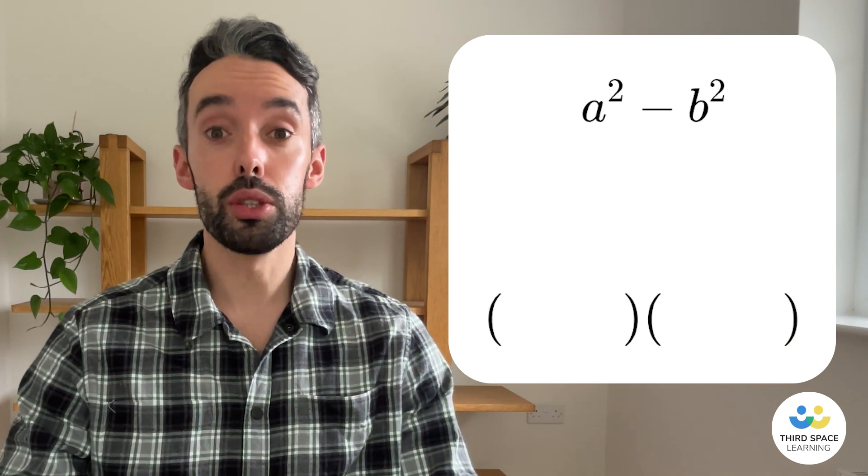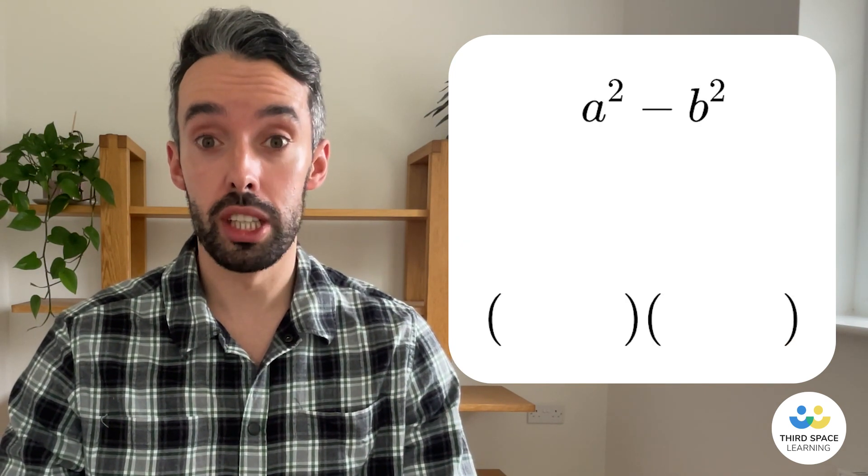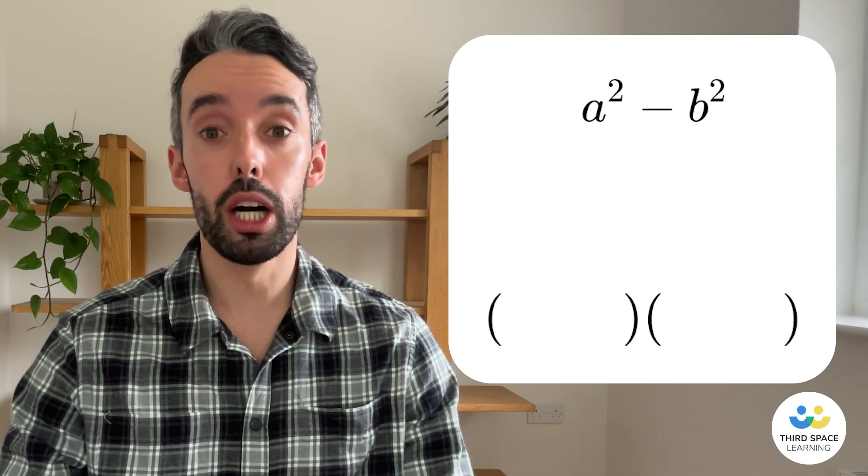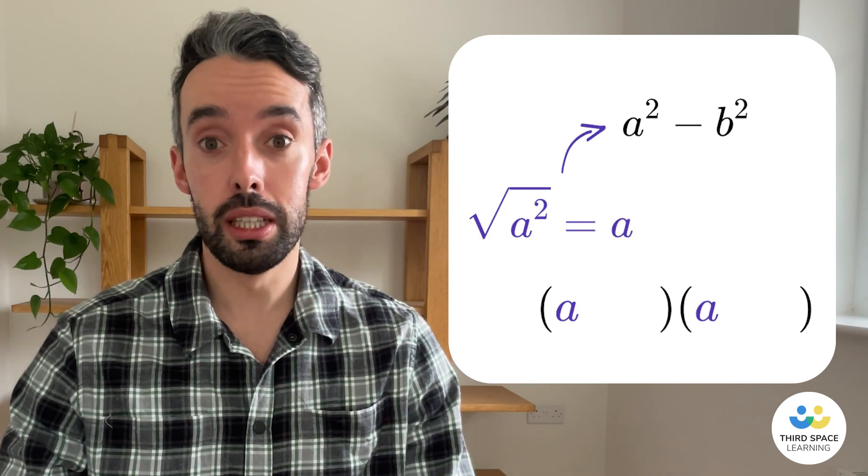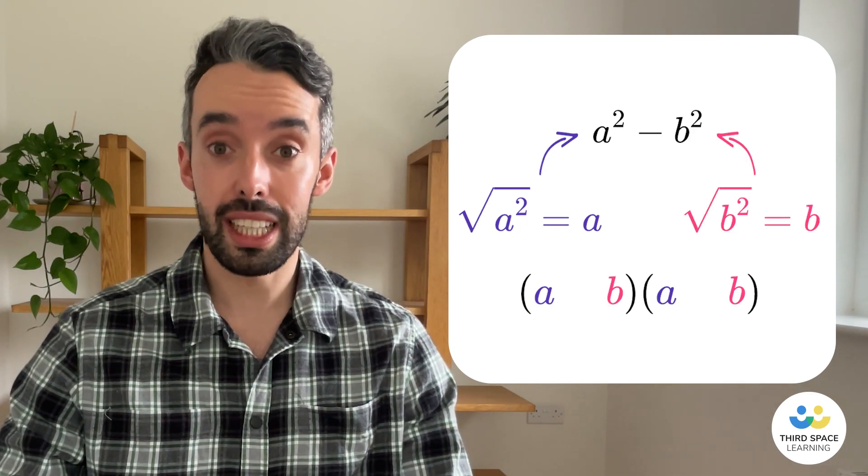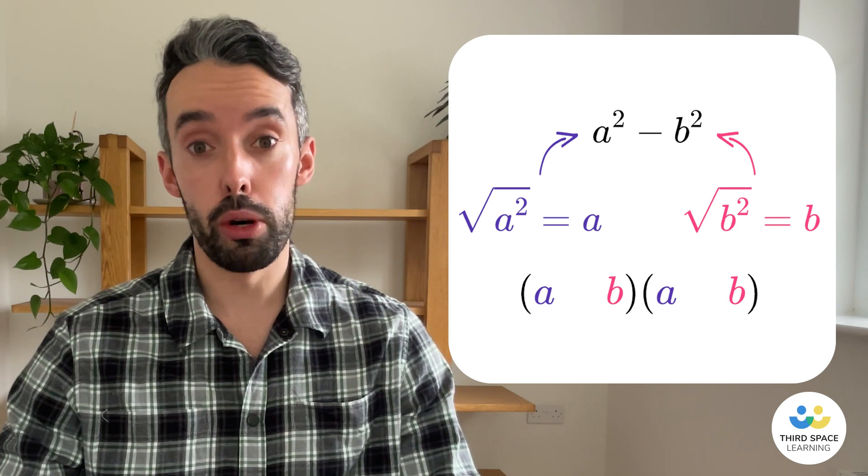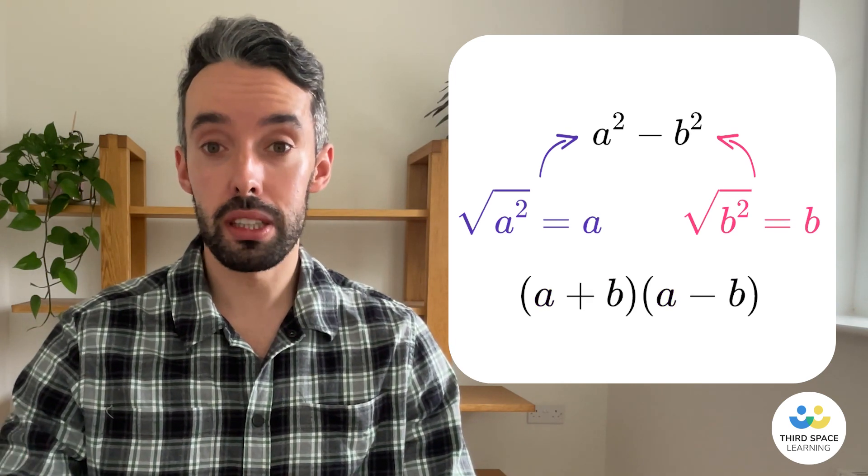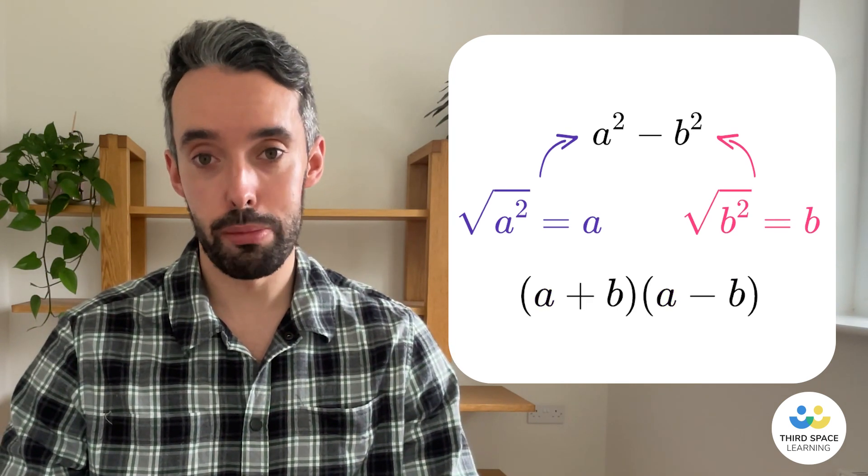So if we have two squared terms that are subtracted from each other, we can factorize it by opening a double bracket, square rooting the first term and putting it at the start of both brackets, square rooting the second term and putting it at the end of both brackets, and then putting a plus in one and a minus in the other bracket.